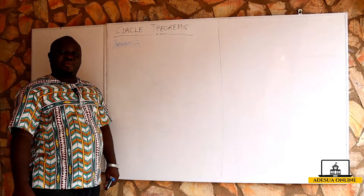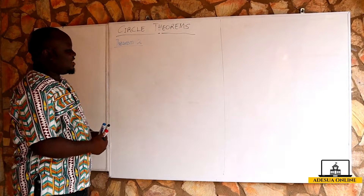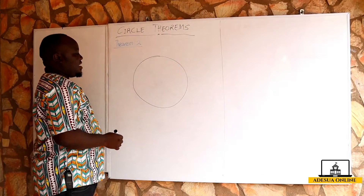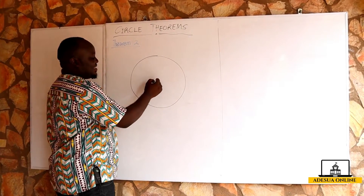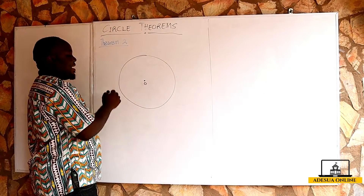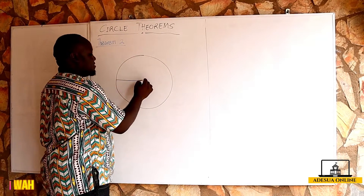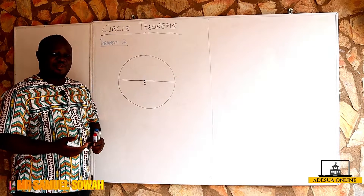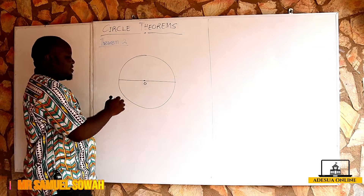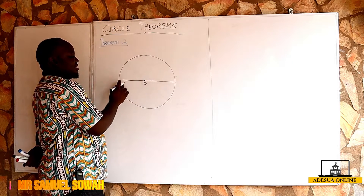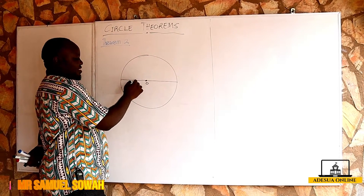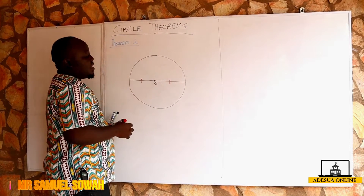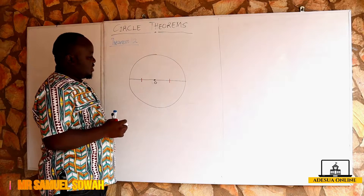We are going to continue with Theorem 2. I have a circle with center O and a diameter. Remember, a diameter is also a chord. The distance from the center to the circumference is a radius, so we have one radius here and another radius here.